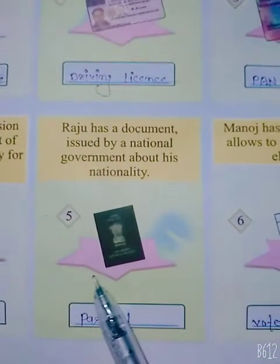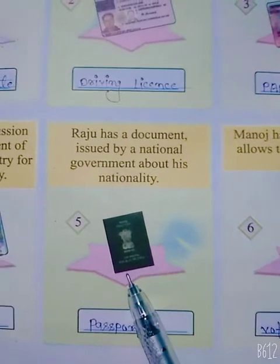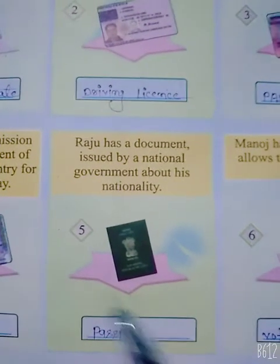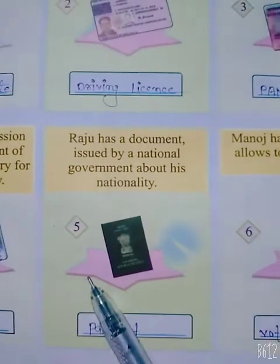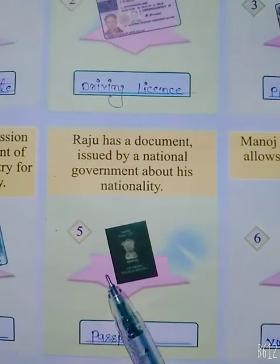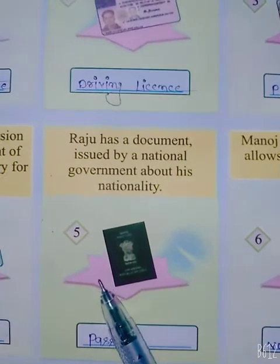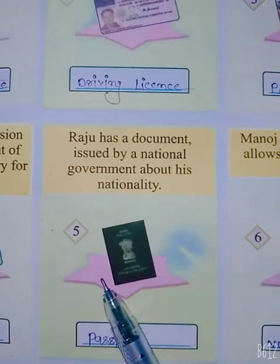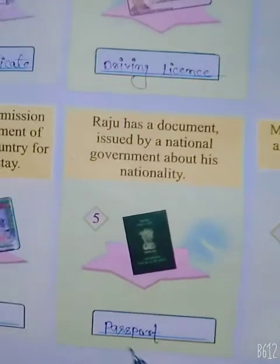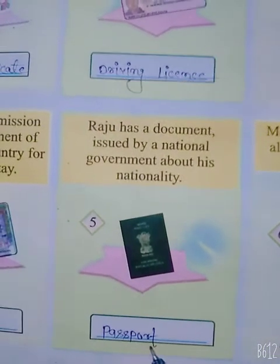Question number five. Raghu has a document issued by a national government about his nationality. Raghu ki paas ek raashtriya sarkar dwara uski raashtriyta ke baare mein jaari kiya gaya ek dastaviz hai. Toh iska name kya hai, bacho? Passport.